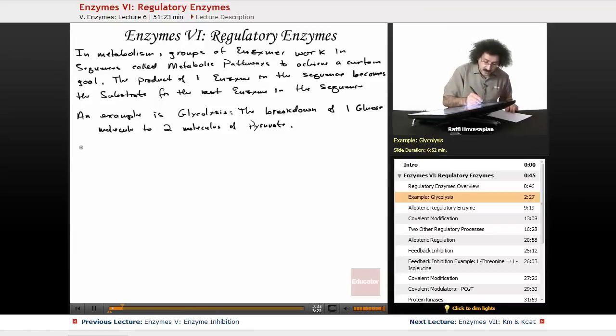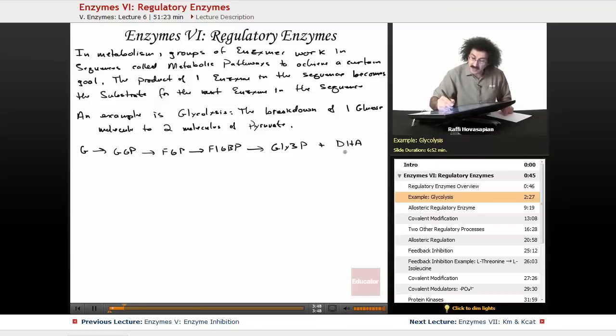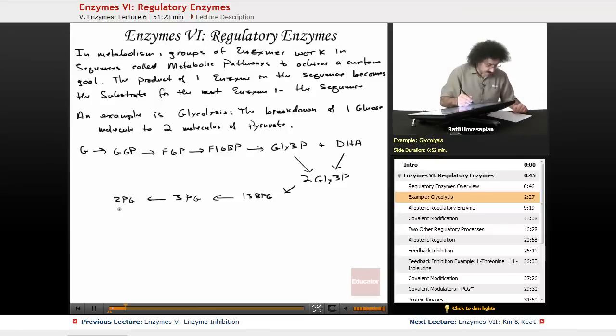So the sequence goes like this. We have glucose going to glucose 6-phosphate, going to fructose 6-phosphate, going to fructose 1,6-biphosphate, going to glyceraldehyde 3-phosphate and dihydroxyacetone. The dihydroxyacetone is converted to another molecule of glyceraldehyde 3-phosphate. So now we have two glyceraldehyde 3-phosphates. This goes to 1,3-phosphoglycerate, goes to 3-phosphoglycerate, goes to 2-phosphoglycerate, goes to phosphoenolpyruvate.